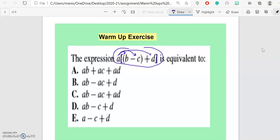So how will it look? When I multiply a with b, it will be ab. Minus sign, when I multiply a with c, it will be ac. Plus sign, and I will multiply a with d.